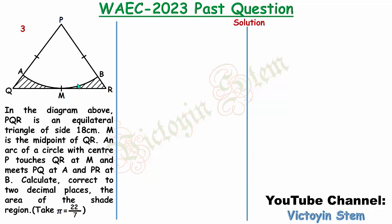As you can see at the leftmost part of the slide, I've written the question and the figure there. I'll try as much as possible to make the solution simple enough to your understanding. To find the area of the shaded portion, I need to find the difference between the area of triangle PQR minus the area of sector PAMB.